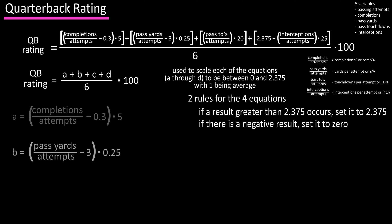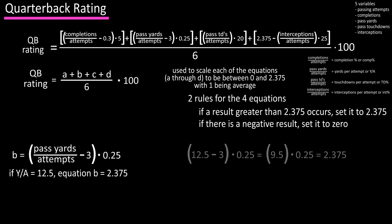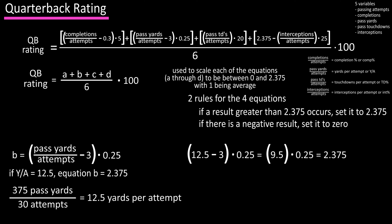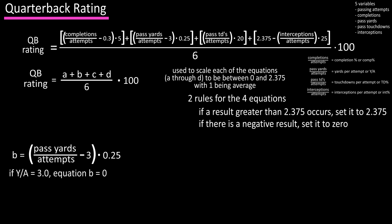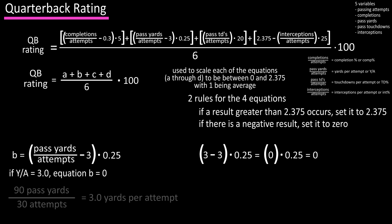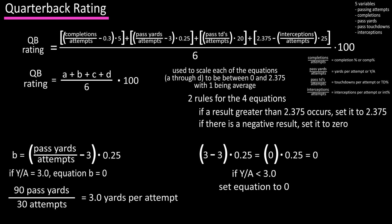To reach 2.375 in equation B, a quarterback needs 12.5 yards per pass attempt — for example, 375 passing yards on 30 attempts. Anything greater than 12.5 yards per attempt would plug in as 2.375 in the main equation. For equation B to result in zero, the quarterback would need 3 yards per pass attempt, such as 90 yards on 30 attempts. Anything less than three yards per attempt gives a negative result, so equation B would be set to zero.